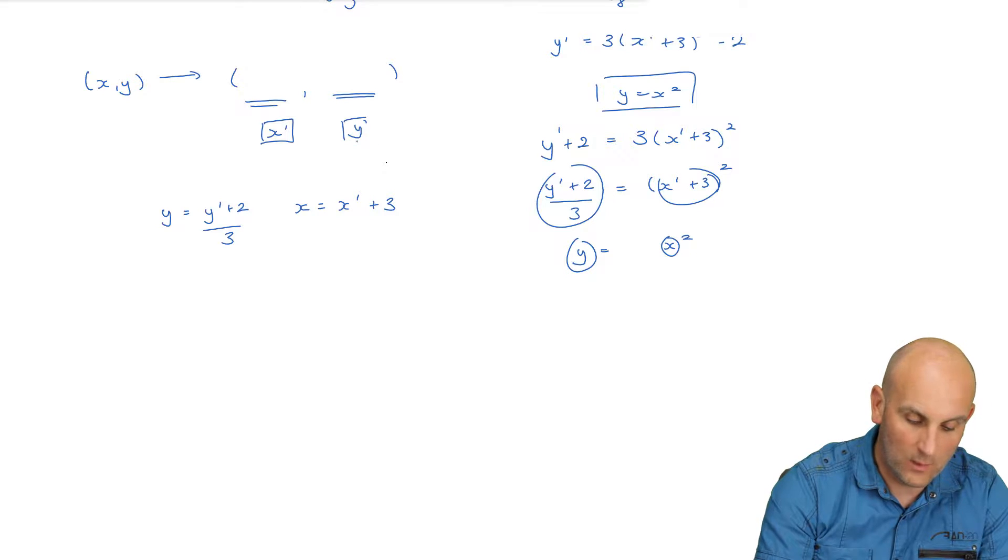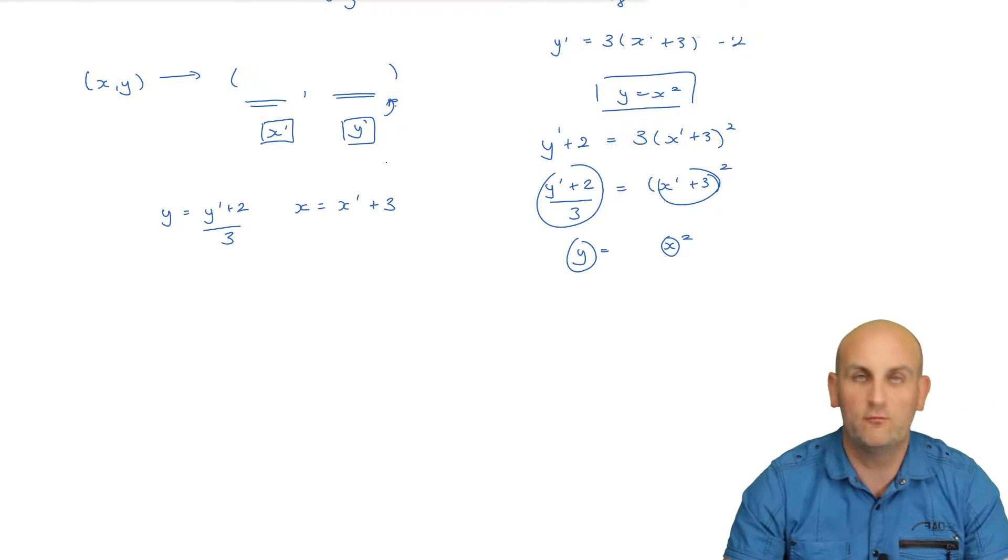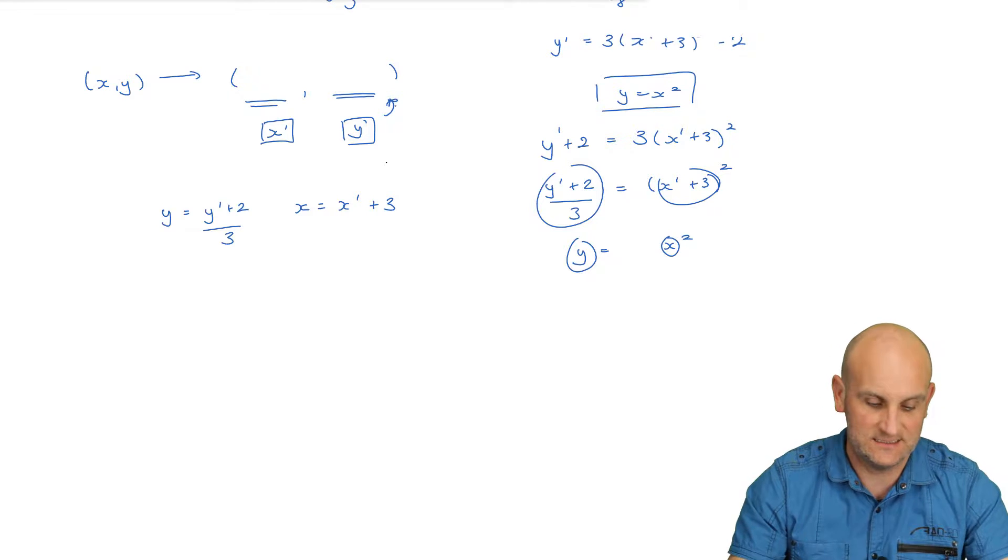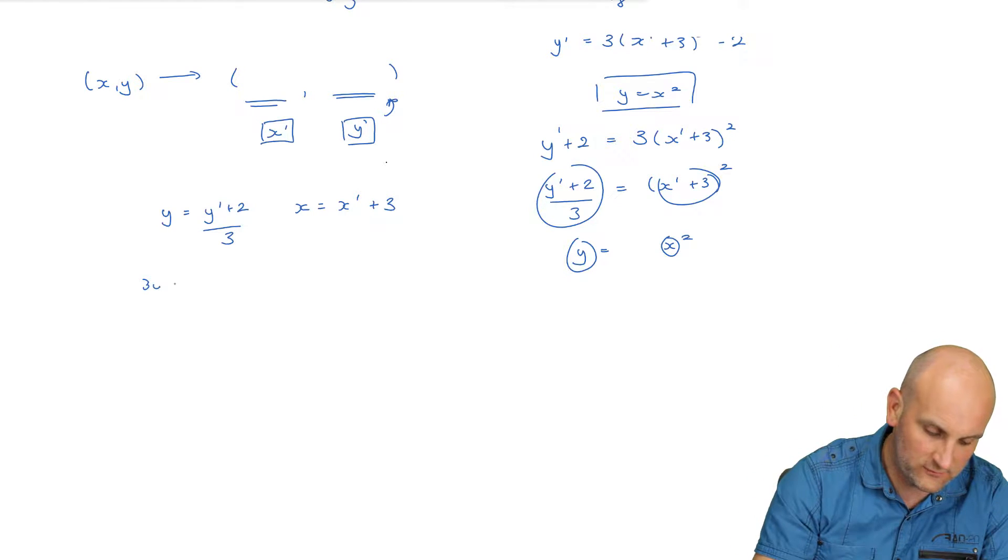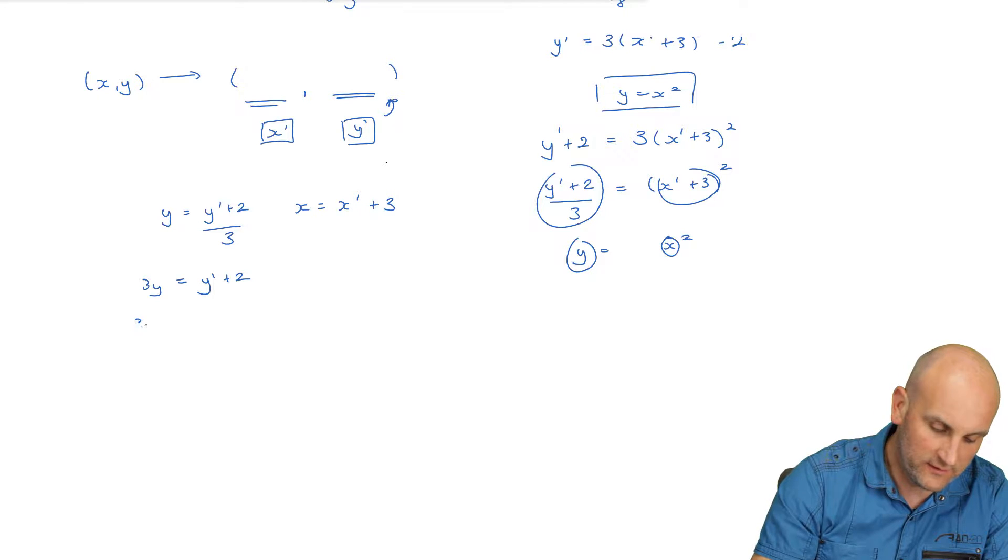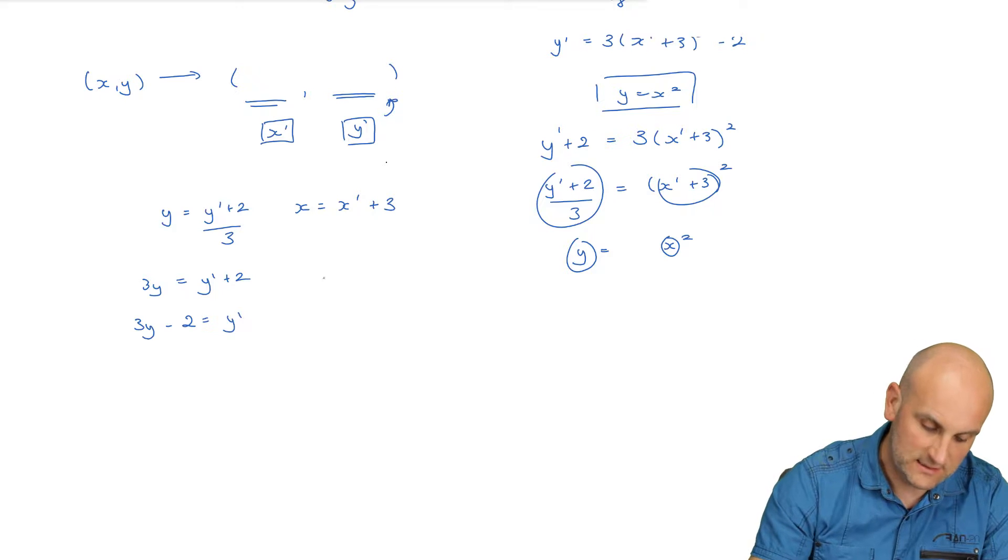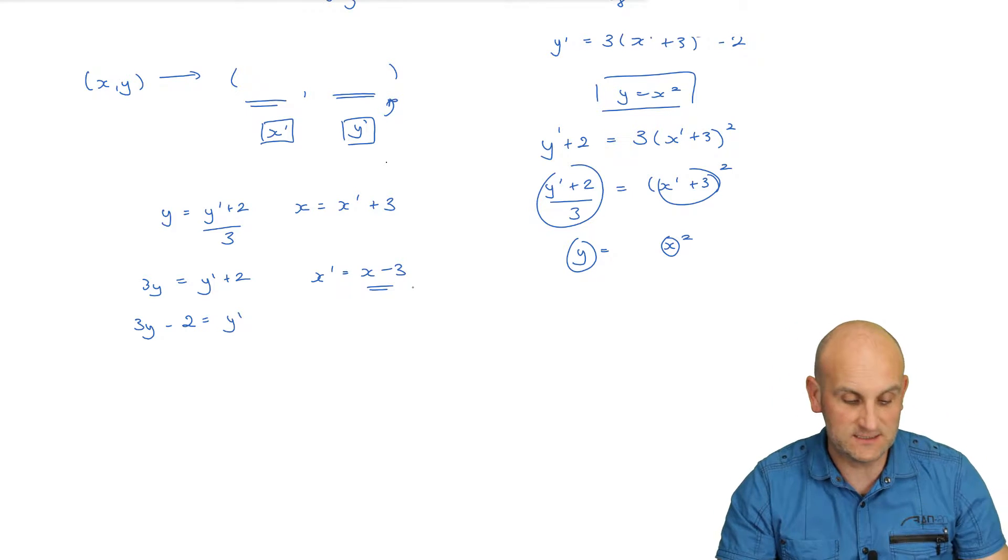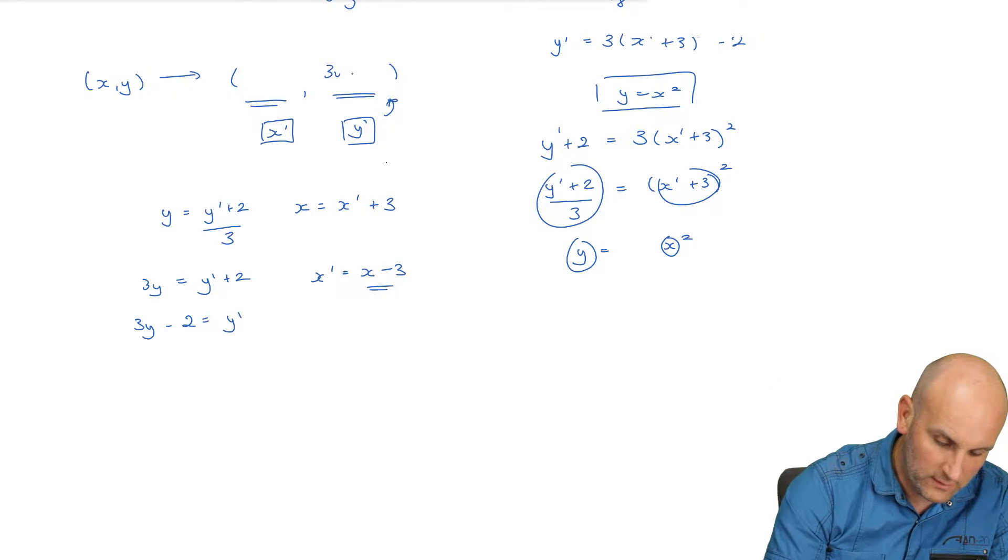Brilliant! So I now know that y is equal to (y' + 2)/3 and x is equal to x' + 3. And again why are we doing this? Well we want to get x dashed on its own and y dashed on its own so that we can write it inside those brackets to make the transformations easy to read. So multiply by three gives me 3y is equal to y' + 2 and then take away two from both sides gives me y' and so x' nicely is going to be equal to x - 3 and now we've got all the information I need because I can say y' is now equal to 3y - 2 and x' is equal to x - 3.